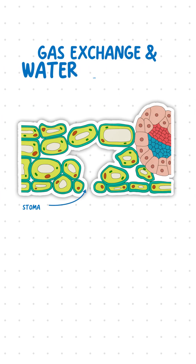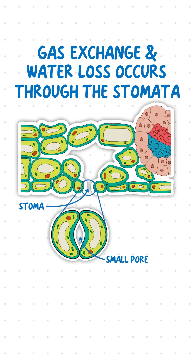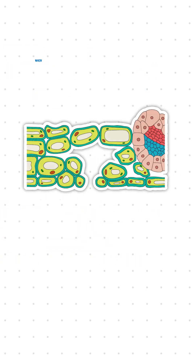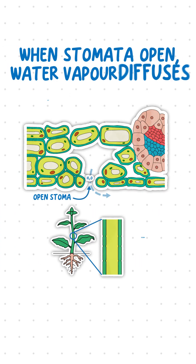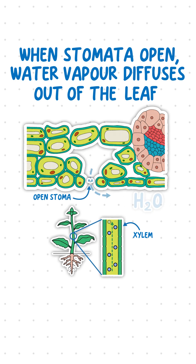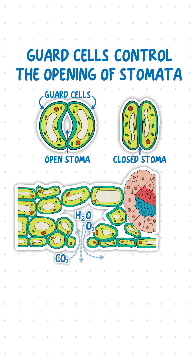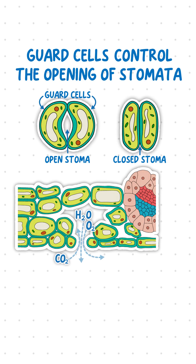Gas exchange and water loss in plants occur through the stomata, which are small pores found on the underside of leaves. When stomata open, water vapor diffuses out of the leaf, which creates a pull that drives a stream of water through the xylem — this is known as the transpiration stream. Guard cells control the opening of stomata and thereby regulate gas exchange and water loss in plants.